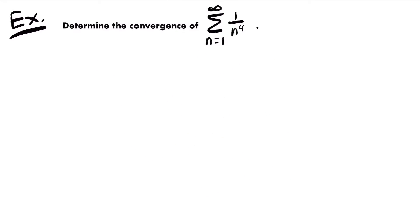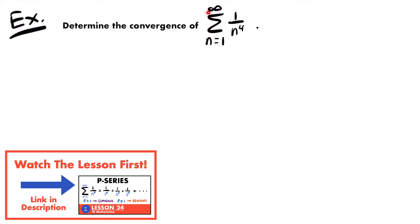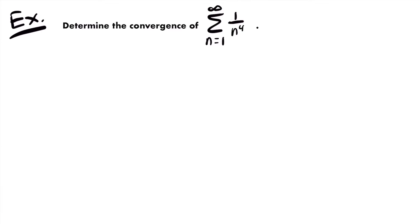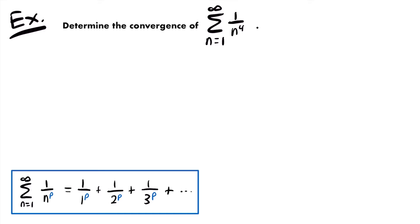So here's our first example. We want to determine the convergence of this series. We have the sum from n equals 1 to infinity of 1 divided by n to the power of 4. A p-series is a series of the form: the sum from n equals 1 to infinity of 1 divided by n to some power p, with terms 1/1^p, 1/2^p, 1/3^p, and so on. Looking at our series, we can see it is a p-series where p is equal to 4.